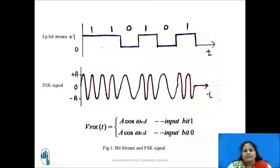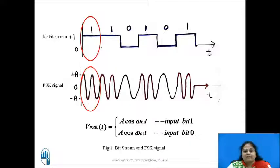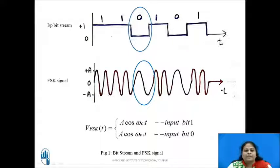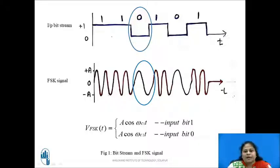The figure shows an example of a bitstream and its FSK signal representation. It can be seen that when the input bit is 1, FSK is represented by a high frequency sinusoidal signal, and when the input bit is 0, it is represented by a low frequency sinusoidal signal having both amplitude and phase constant. In mathematical form, FSK signal is represented as V_FSK(t) = A·cos(ωc1·t) when input bit is 1, and A·cos(ωc2·t) when input bit is 0, where ωc1 and ωc2 are the two different angular frequencies for the two respective carriers.